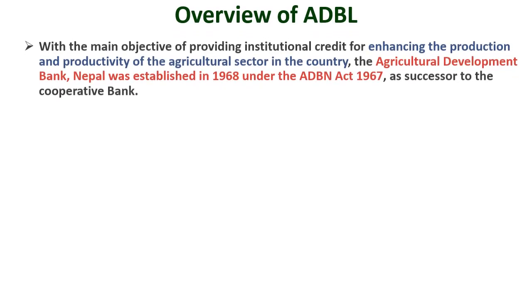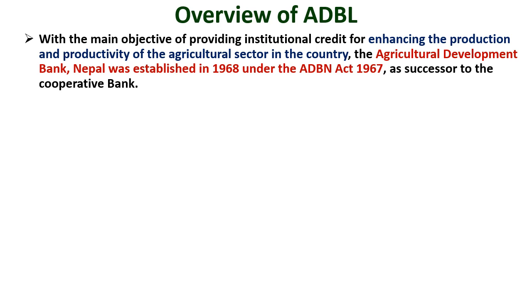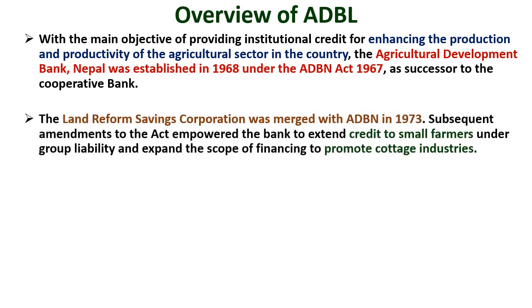Overview of ADBL: With the main objective of providing institutional credit for enhancing the production and productivity of the agricultural sector, the Agricultural Development Bank Nepal was established in 1968 under the ADBN Act 1967, as successor to the cooperative bank. The Land Reform Savings Cooperation was merged with ADBN in 1973.